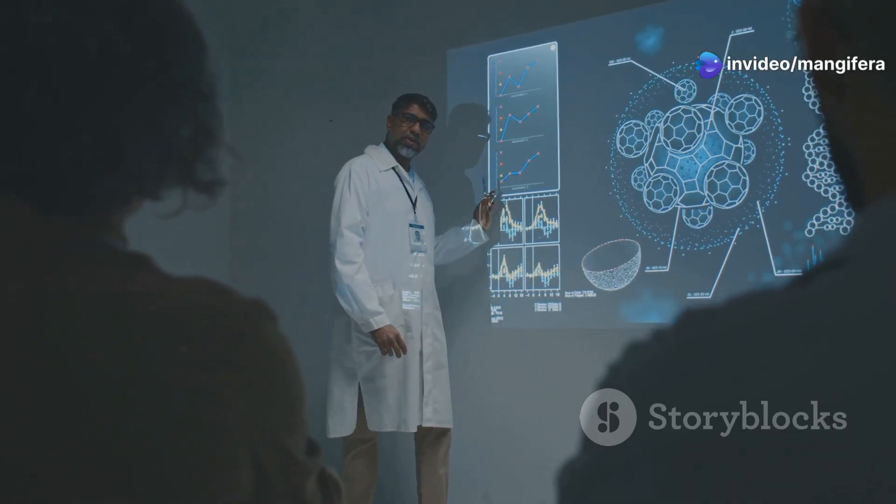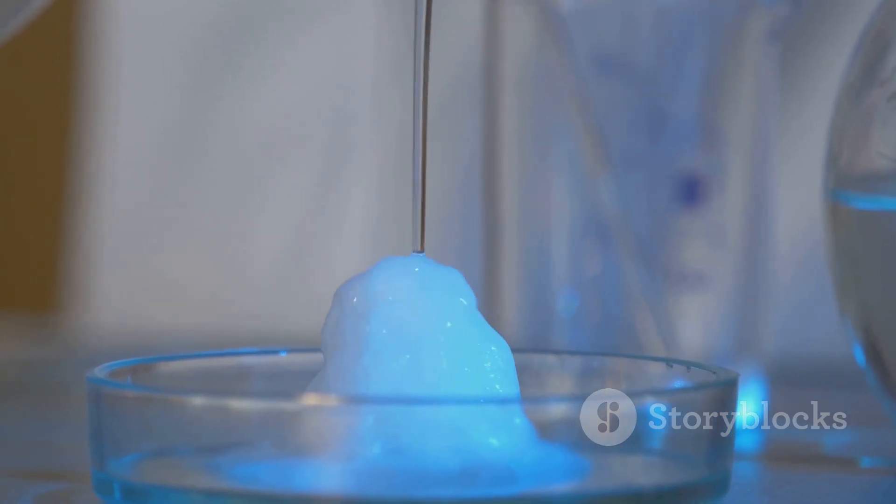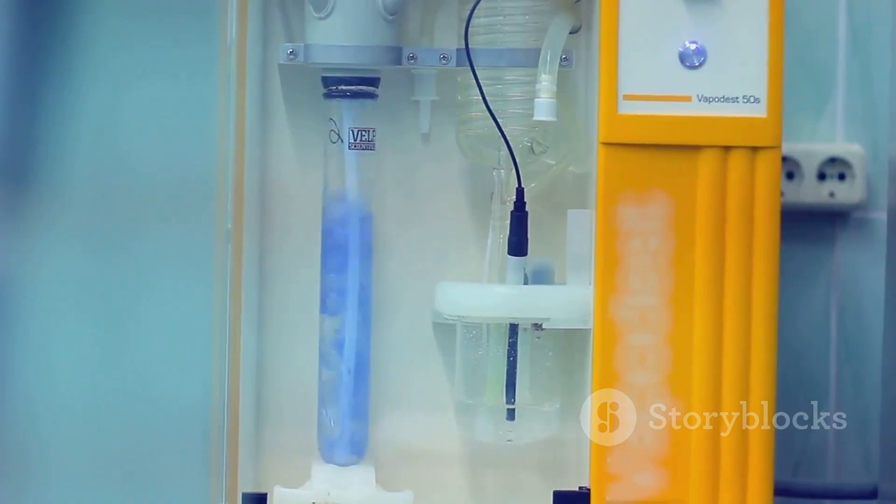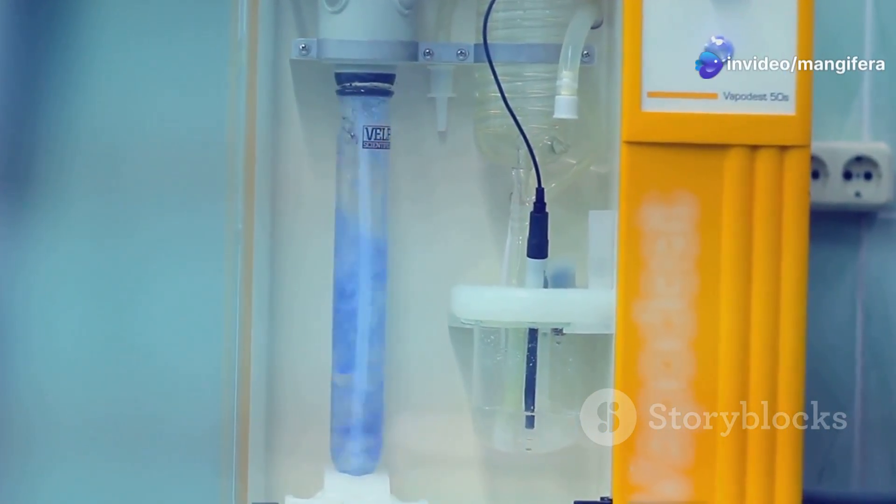Now let's talk about the star of the show, the entrainer. An entrainer is a substance added to the mixture to break the azeotrope. It changes the boiling points of the components, allowing them to be separated.